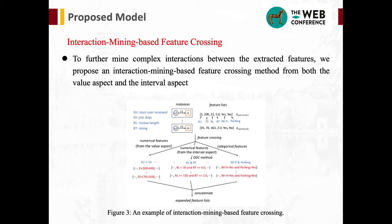Inspired by the construction of useful features by experts and the information aggregation process of GCN, we design a graph-based feature extraction method to generate features automatically by leveraging the structure of the review graph. For a node in the review graph, besides its own attributes, different attributes of its connected edges and neighbor nodes are collected as supplementary. Thus, we define a neighbor pooling method to aggregate these attributes from different neighbors as features.